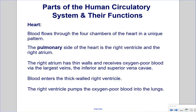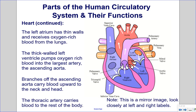Heart: Blood flows through the four chambers of the heart in a unique pattern. The pulmonary side consists of the right ventricle and right atrium. The right atrium has thin walls and receives oxygen-poor blood via the largest veins, the inferior and superior vena cavae. Blood then enters the thick-walled right ventricle, which pumps oxygen-poor blood into the lungs. The left atrium has thin walls and receives oxygen-rich blood from the lungs. The thick-walled left ventricle pumps oxygen-rich blood into the largest artery, the ascending aorta. Branches off the ascending aorta carry blood to the neck and head, while the thoracic artery carries blood to the rest of the body.